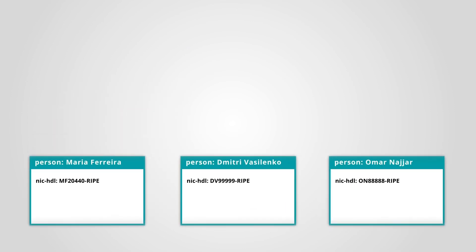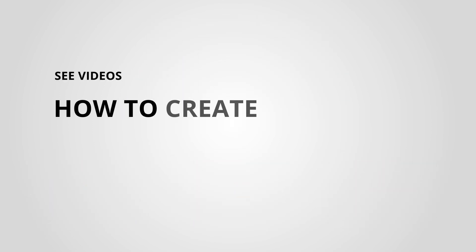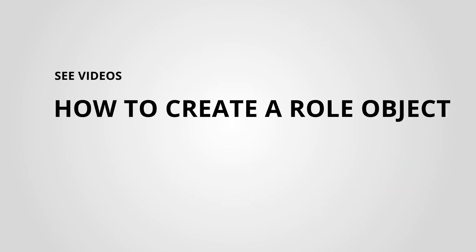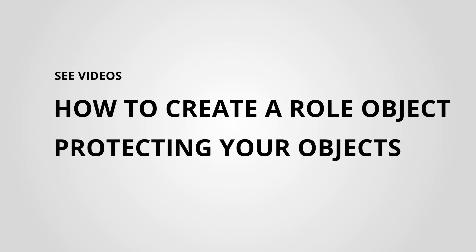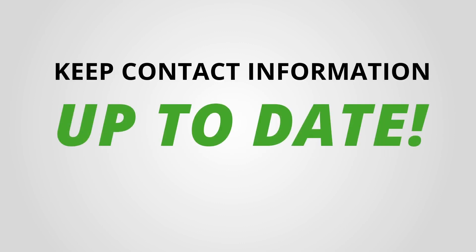Is there more than one person responsible for a network? Then it is good practice to use a role object. See our video, 'How to create a role object in the RIPE database'. To know more about how maintainers work, see the video 'Protecting your objects in the RIPE database'. And don't forget to keep your contact information up to date in the RIPE database.